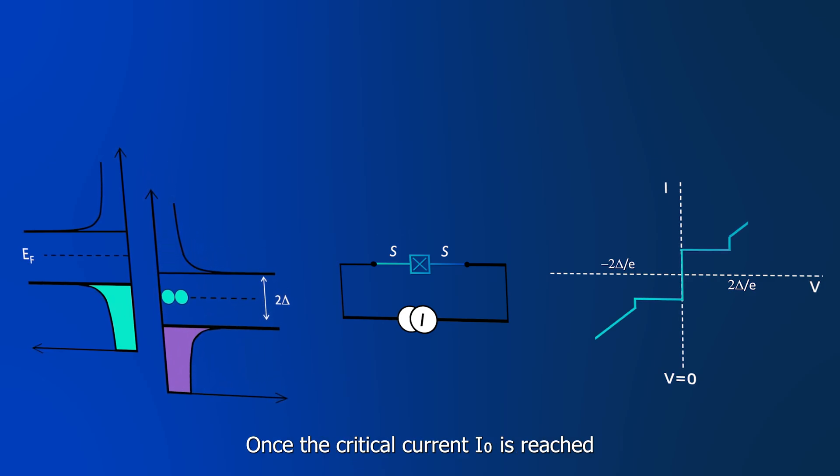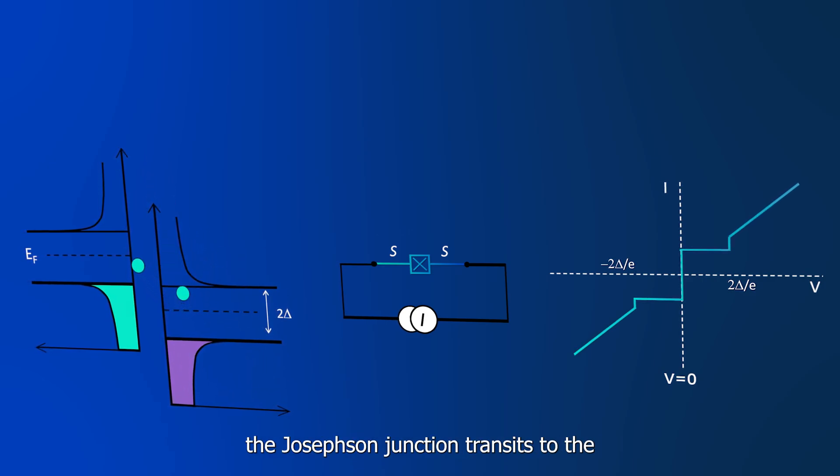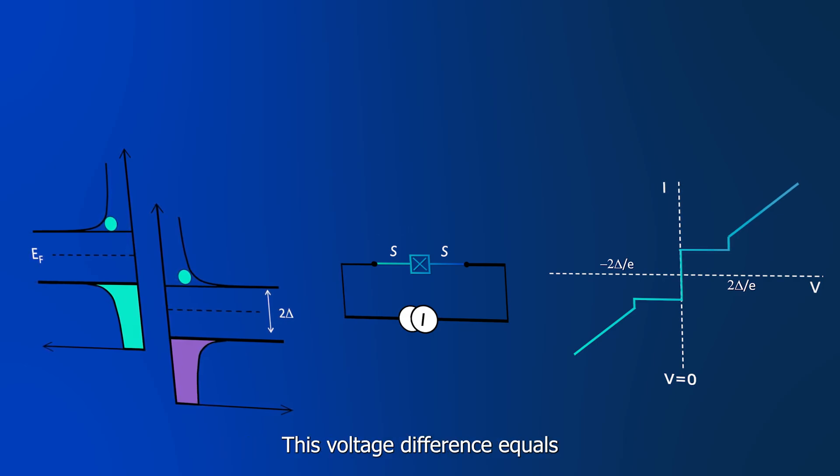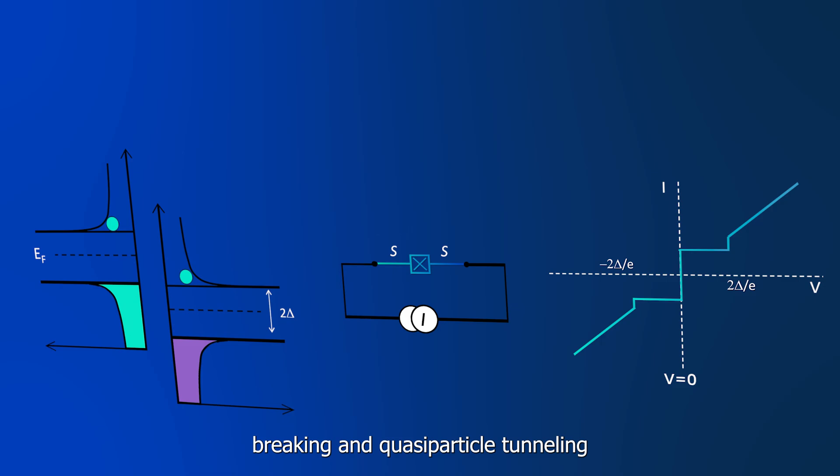Once the critical current I sub zero is reached, the Josephson junction transits to the dissipative state, and a voltage drop will develop. This voltage difference equals two times the energy gap, in order to allow for Cooper pair breaking and quasiparticle tunneling.